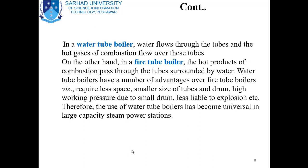On the other hand, in a fire tube boiler, the hot products of combustion pass through the tubes and the water surrounds them. Water tube boilers have a number of advantages over fire tube boilers: they require less space, smaller size of tubes and drum, and have high working pressure due to the small drum, and are less liable to explosion.